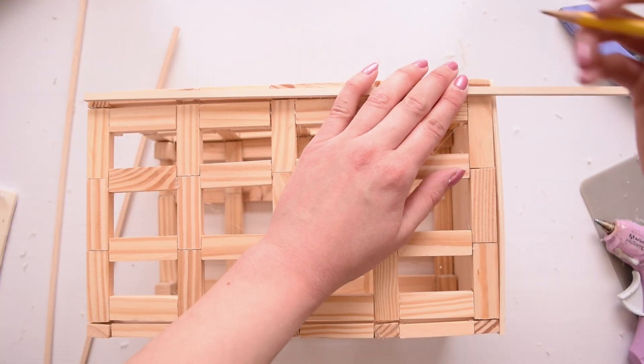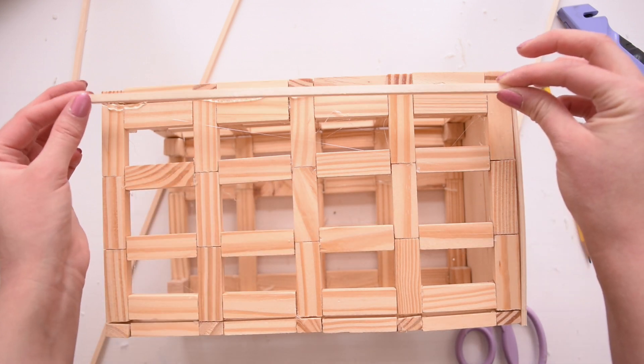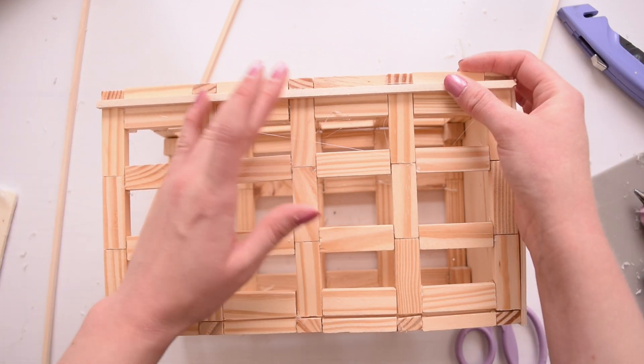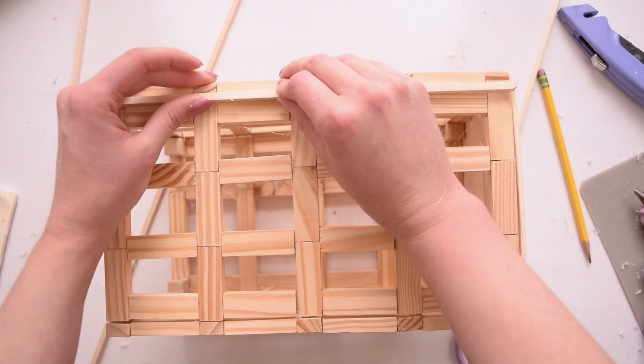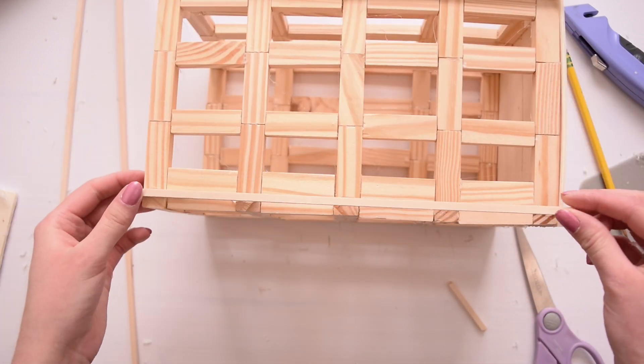This next step is optional but I did have these really small square dowels in my stash and I figured this would just kind of clean it up a little bit in the joints that you see here so I just cut them down to size and added some hot glue and stuck them into place.